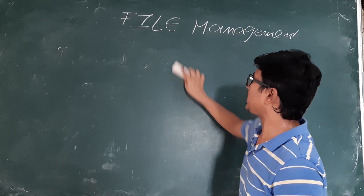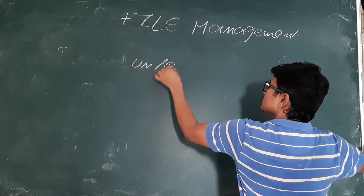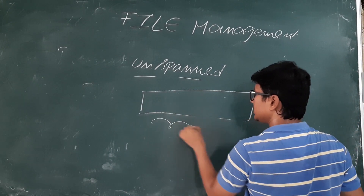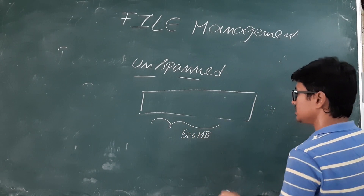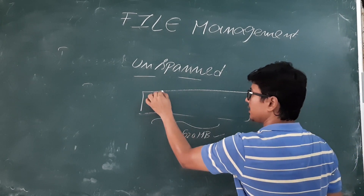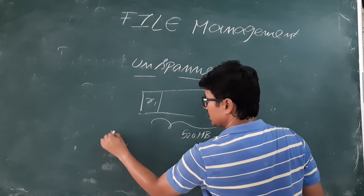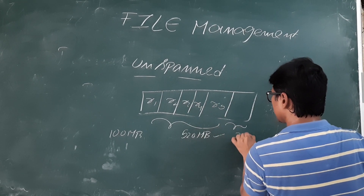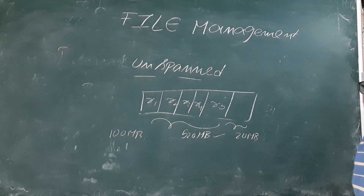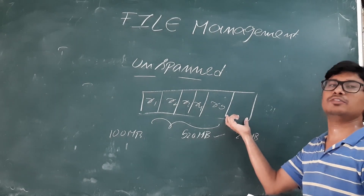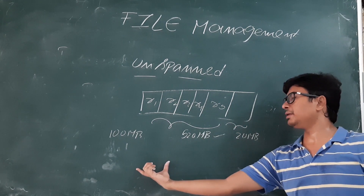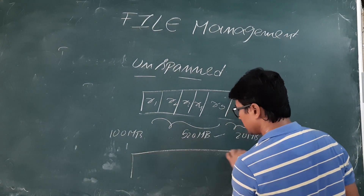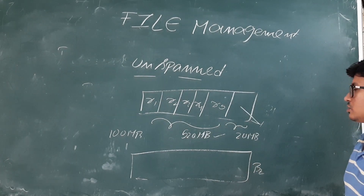Now the unspanned strategy. With the same example — block size is 520 MB and record size is 100 MB — record 1 through record 5 will be kept, and the 20 MB will remain. Now where will I keep record 6? In the unspanned strategy, I will not keep record 6 here. Whereas in the spanned strategy we kept part of record 6 in block 1 and the remaining in block 2, in the unspanned strategy we leave this space free and keep record 6 in block 2.